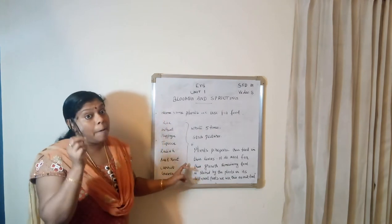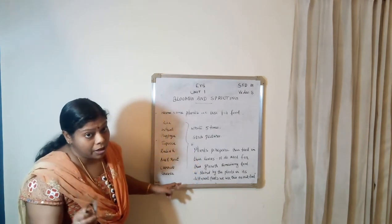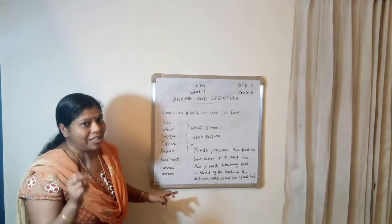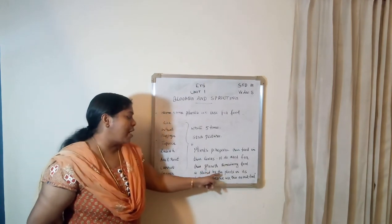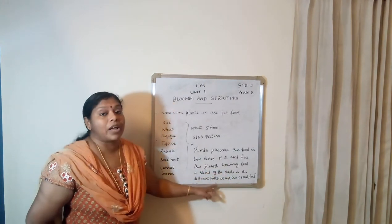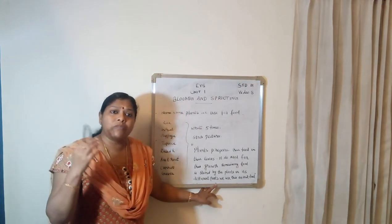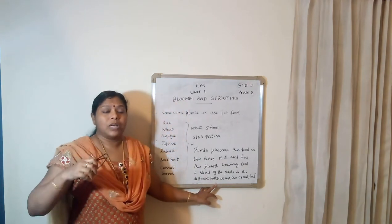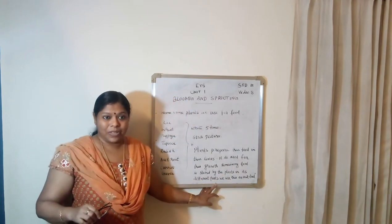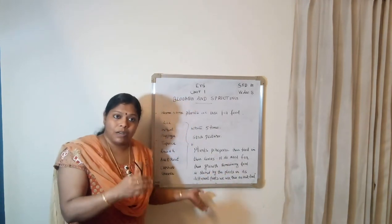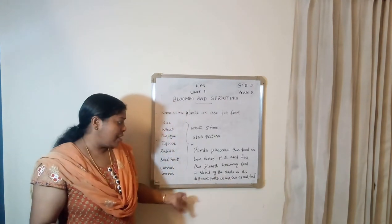Keep in mind, plants prepare their food in their leaves. That food they use for their growth. And the remaining food is stored by the plants in its different parts — some in the stem, some in the seed, some in the leaf, like that.